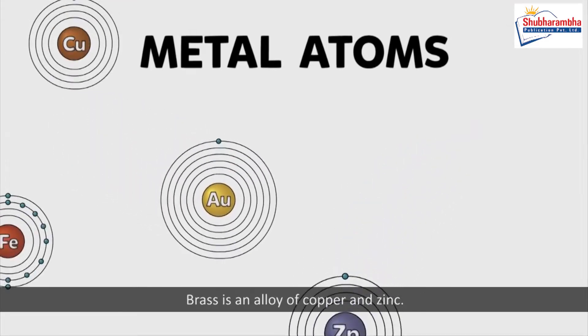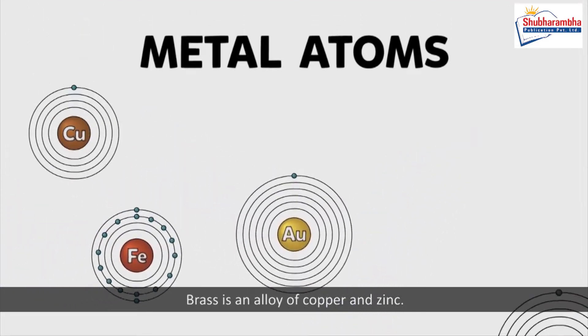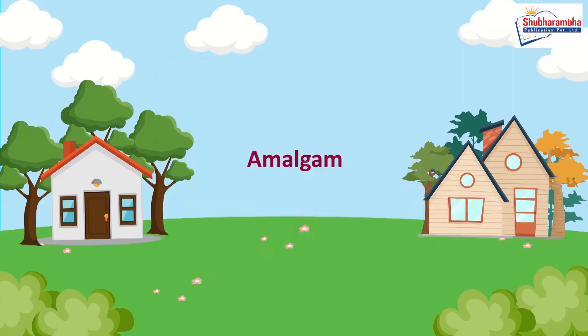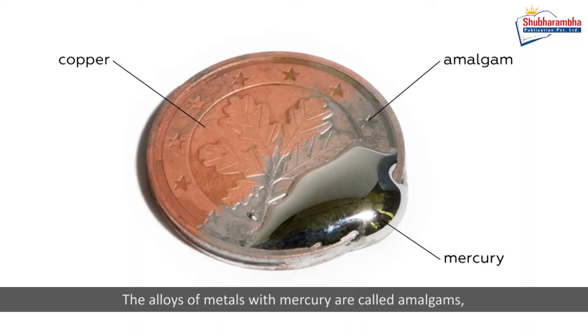Brass is an alloy of copper and zinc. Bronze is an alloy of copper and tin. Amalgam: The alloys of metals with mercury are called amalgams, e.g., sodium amalgam, zinc amalgam, etc.